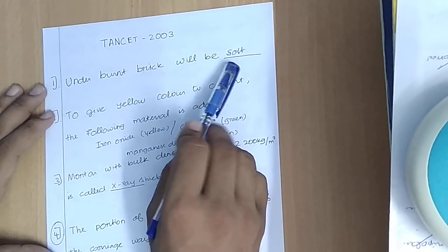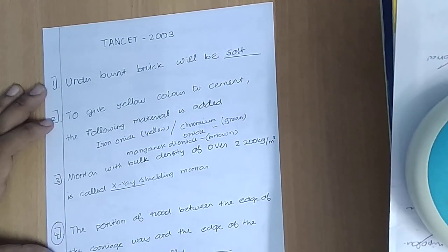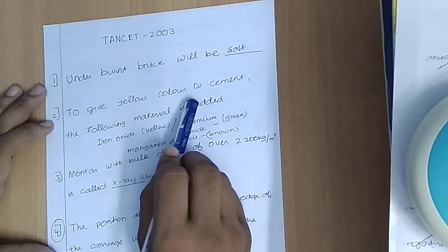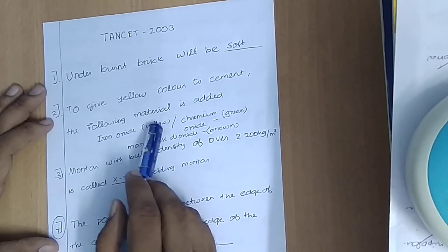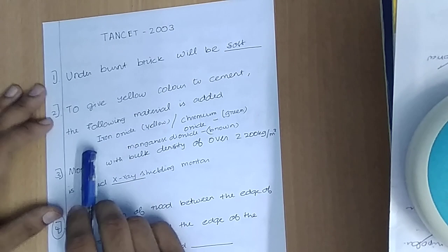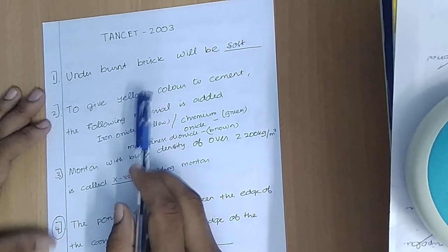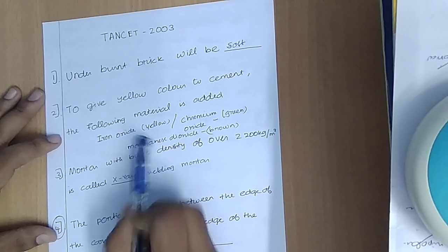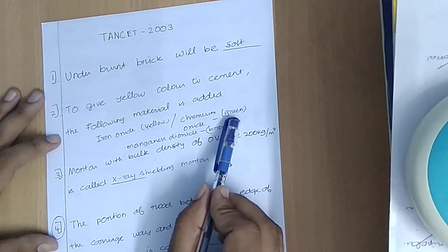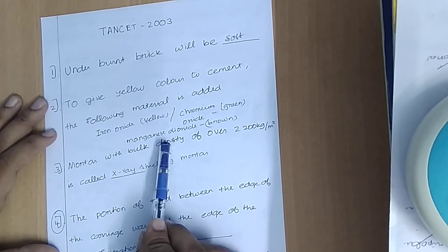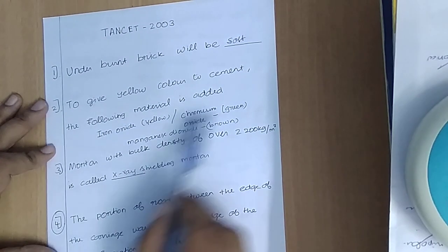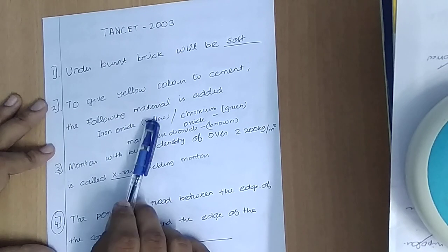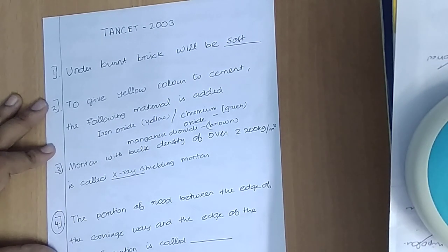Here is the question: to give cement a yellow color, the following material is added — iron oxide. Chromium oxide gives a green color, and manganese dioxide gives a brown color. This is the exercise on materials added to cement.